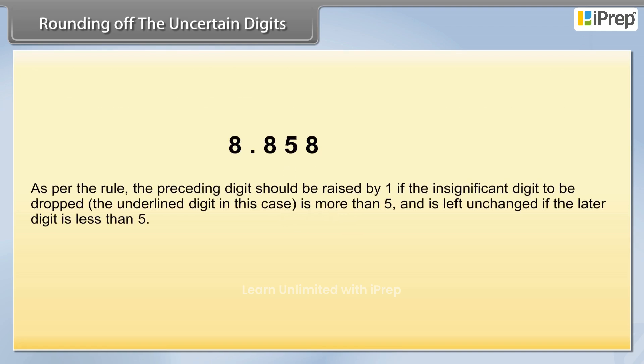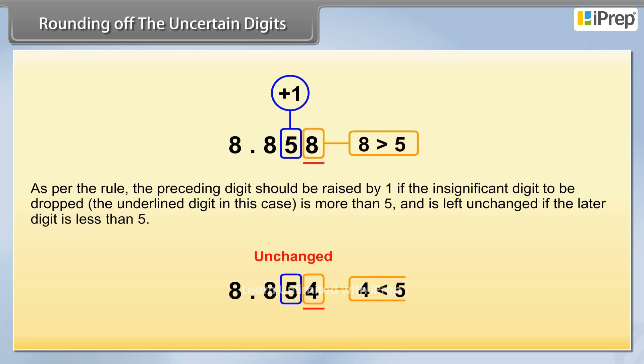As per the rule, the preceding digit should be raised by 1 if the insignificant digit to be dropped is more than 5, and is left unchanged if the later digit is less than 5.